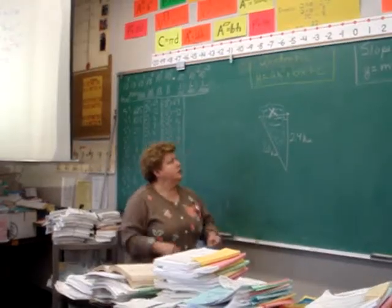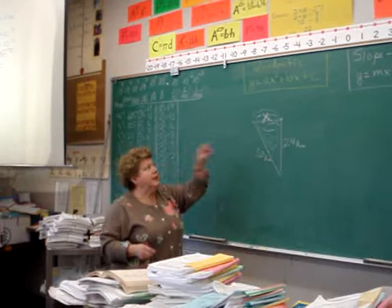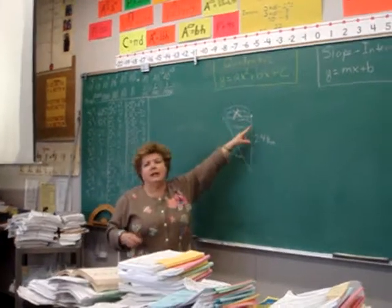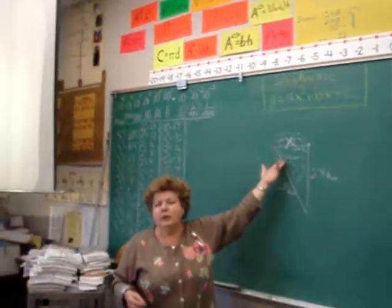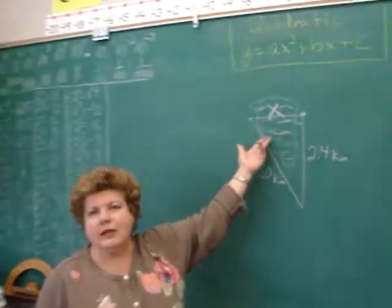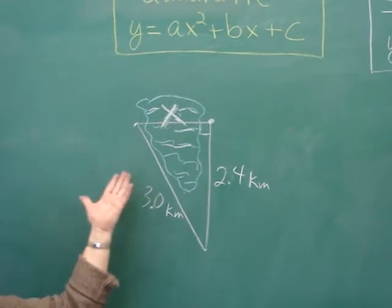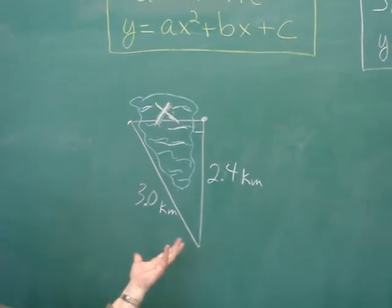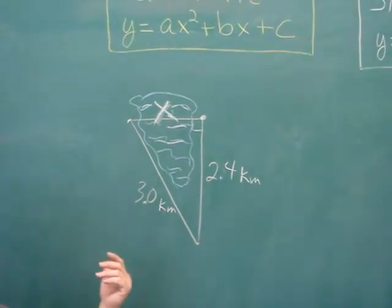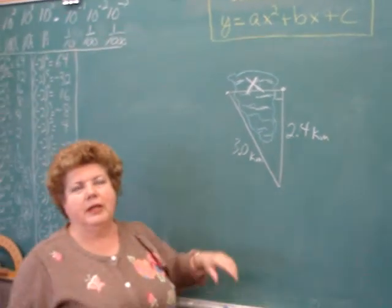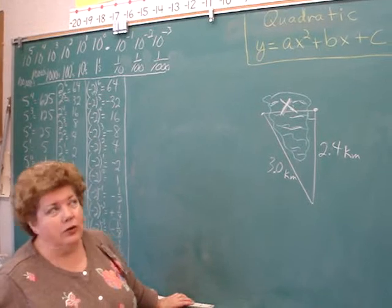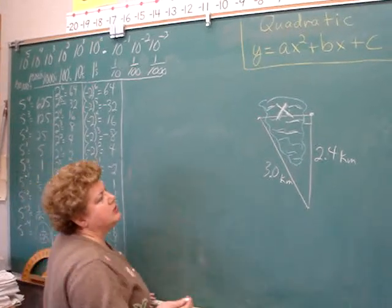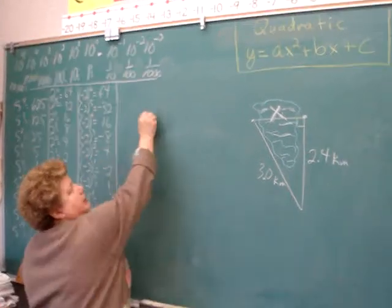So on this one, we're going to use Pythagorean relation to find the distance across the lake. Now with this one, you can't get in a rowboat and go across the lake and string a string across for how many kilometers. Or are you going to get in the water and swim across the lake? And you're not going to be able to walk across the water in order to get the distance across the lake. So we're using Pythagorean relation here.